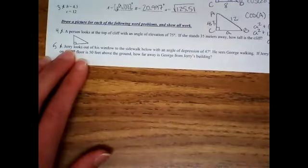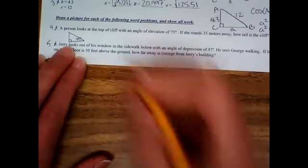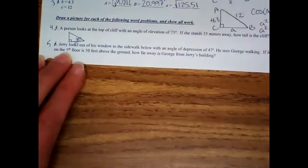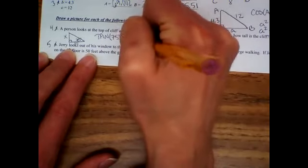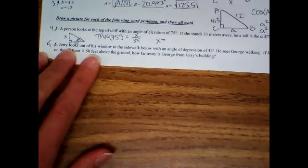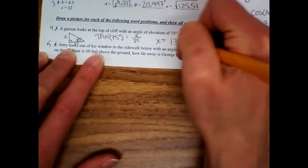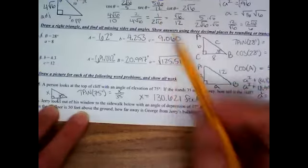A lot of people find the word problems honestly easier than some of the other ones that we just did. A person looks at the top of a cliff with an angle of elevation of 75 degrees, so your 75 degrees goes there. We are standing 35 meters away, so 35 goes at the bottom. How tall is the cliff? Sine, cosine, or tangent? Tangent. Tangent of 75 degrees equals x over 35. Slap it in your calculator. 130.621 meters. Does anyone feel like that's easier? I honestly think the word problems are easier.